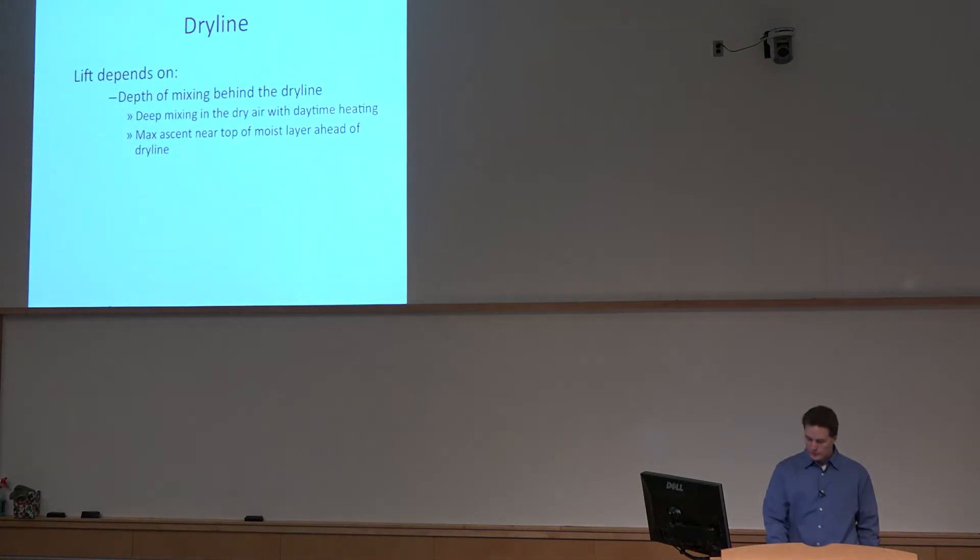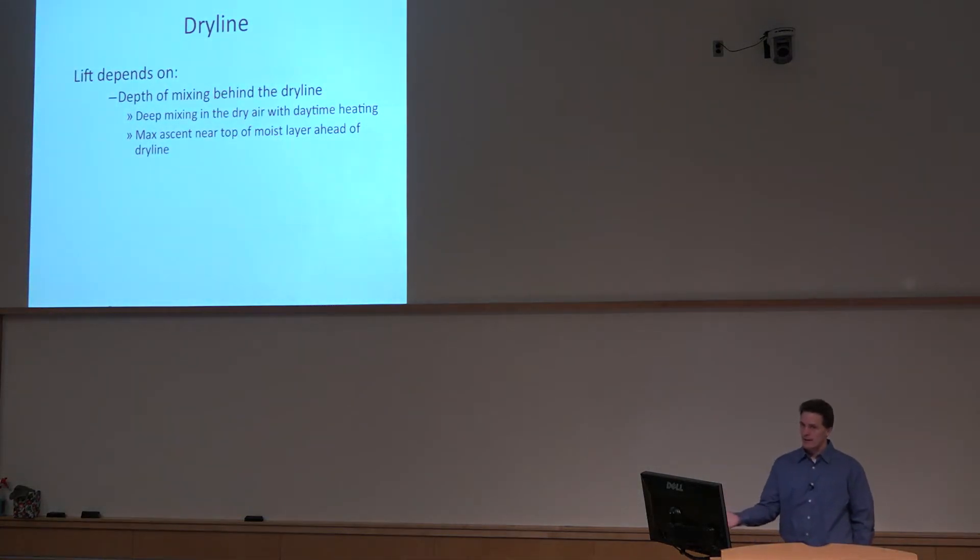So the dry line itself, can we get that strength and depth of vertical motion? How do we estimate this using the real world dry line? Well the depth of mixing on the moist side and the dry side are used in combination to figure out how deep the dry line circulation is based on observations.